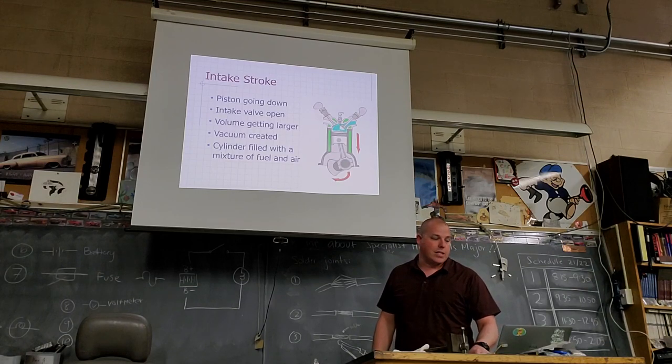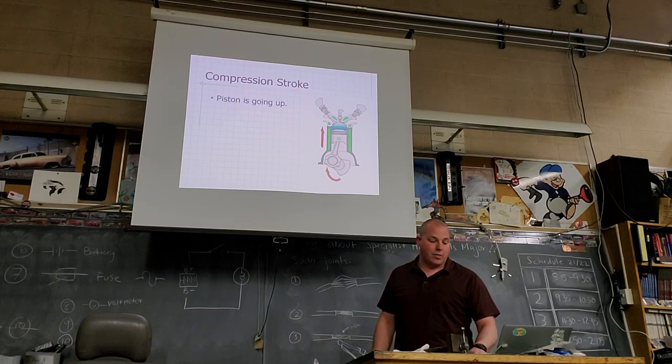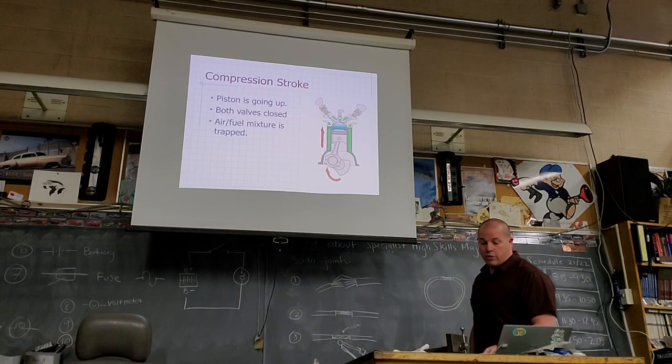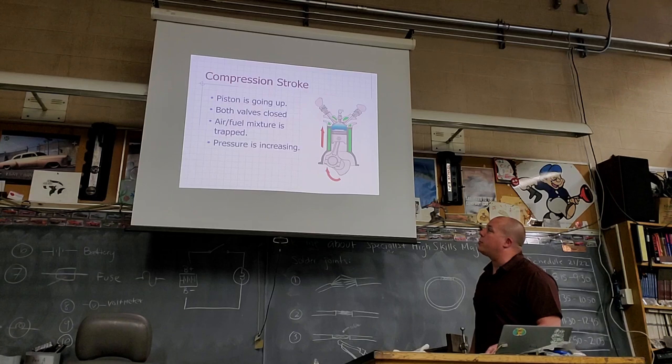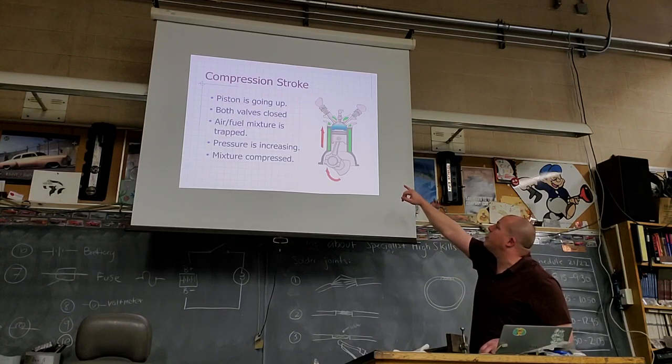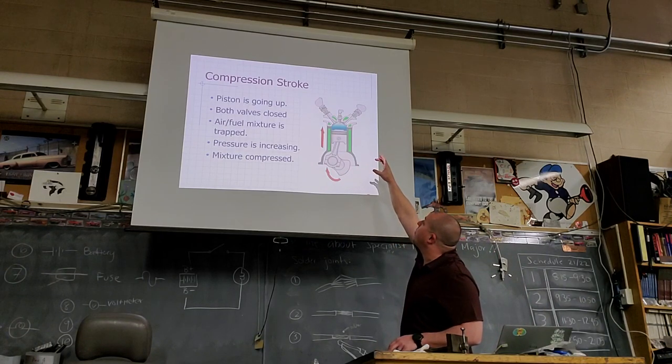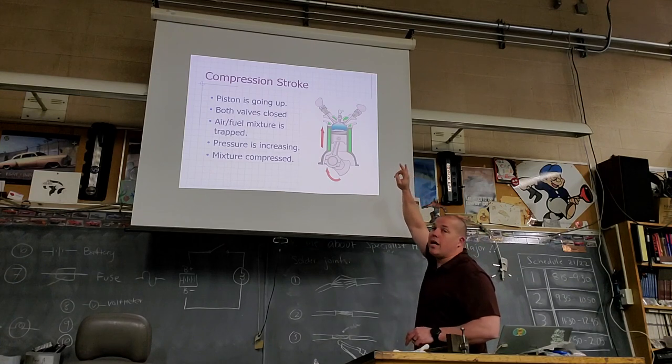Second stroke is the compression stroke, so that's the piston coming back up. Both valves are closed. If we had an open valve we can't build pressure, so both valves are closed. We're compressing the air mixture. You can see in this image as rotation, this is going up, we're compressing everything. Both valves are closed. Do we know what's going to happen next?